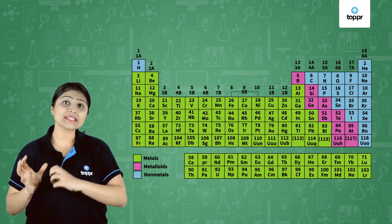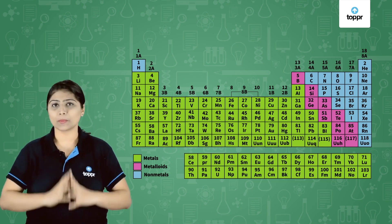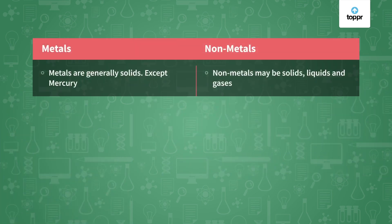Let us see how metals and non-metals have opposite properties. Metals are generally solids at room temperature except mercury — for example gold, silver, platinum, iron, copper etc. Non-metals may be solid, liquid or gases at room temperature. For example, carbon, which is found either in the form of diamond or graphite, is in the solid state. Bromine is a non-metal in the liquid state. Oxygen, hydrogen and nitrogen are gases — non-metals in the gaseous state.